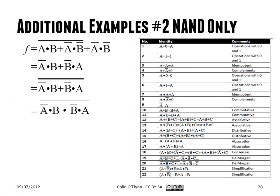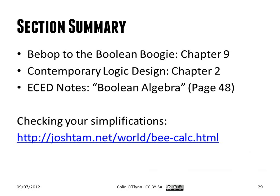There's the full example again. If you want to see more about this, chapter nine of 'Bebop to the Boolean Boogie' covers it, and all the notes have these simplifications on them.